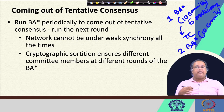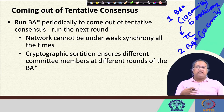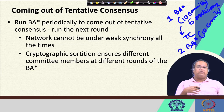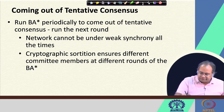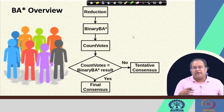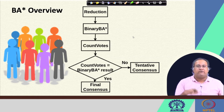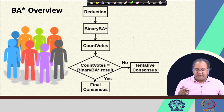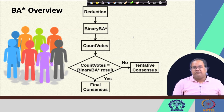We can run BFT or Byzantine agreement protocol in a scalable way with the help of Algorand, by introducing the concept of cryptographic sortition using a verifiable random function, which clearly makes the system much more scalable compared to existing work. The overview of the BA star algorithm is: you reduce the size of the network using cryptographic sortition, run binary BFT to decide whether to accept or reject a block, count the votes. If your votes equal the binary BA star result, you are in final consensus; otherwise you are in tentative consensus and move to the next round with a new set of committee members.